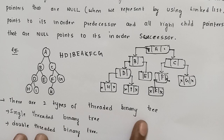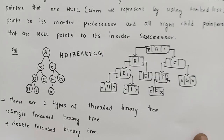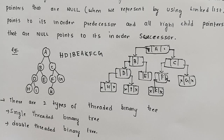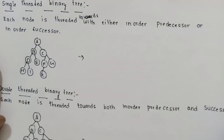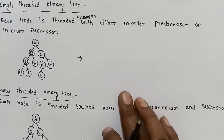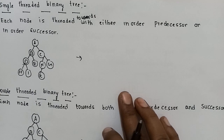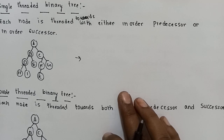There are two types of threaded binary tree: single-threaded and double-threaded. We will discuss both. In a single-threaded binary tree, each node is threaded towards either the in-order predecessor or the in-order successor — only one thread per node.